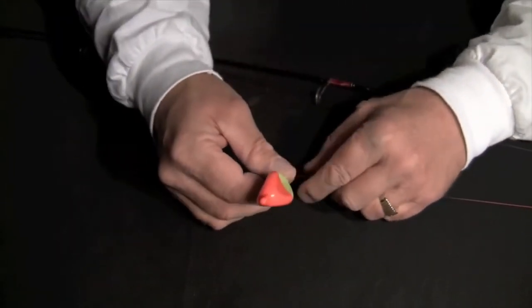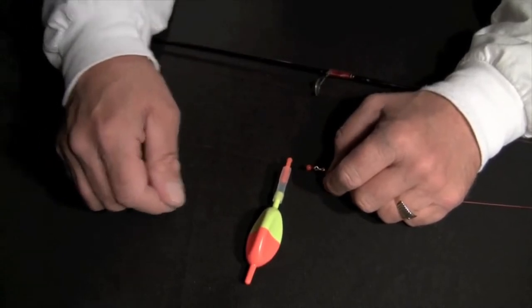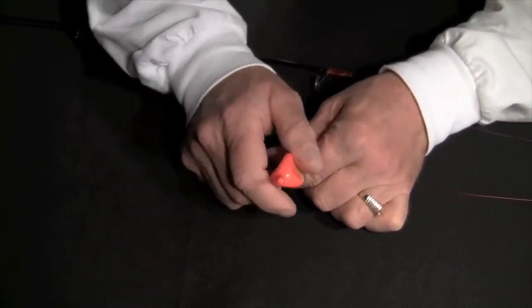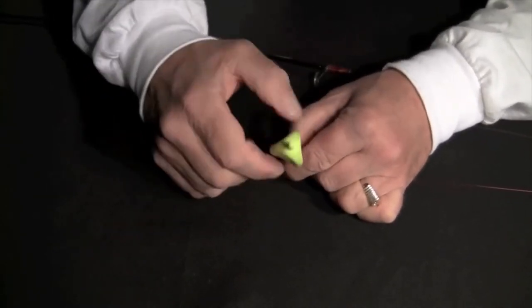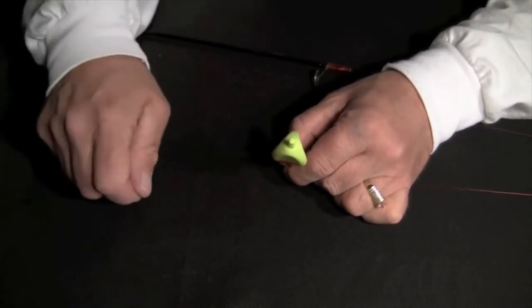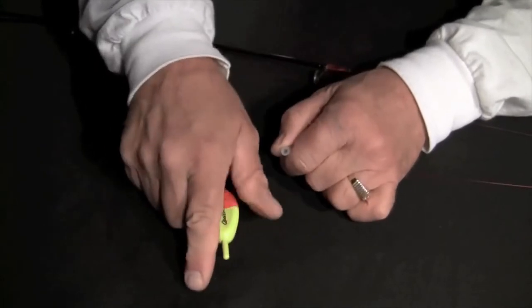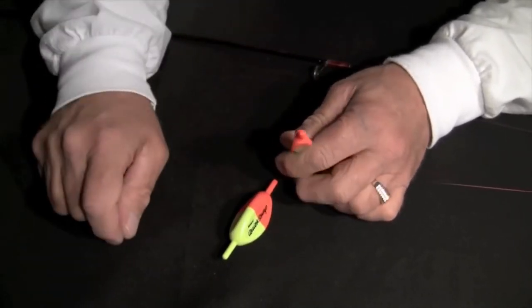The nice thing about the Wing-It Quick Swap is that you can take it off or put it on your line without cutting your line. The other thing is if you want to change colors, you just unplug it, turn it around and plug the orange into the tube and you'd have the yellow up. In case it gets dark and you can't see the orange as well, just turn it around, put the yellow up. Or you can change sizes. You can unplug one and plug another one in.